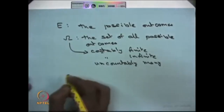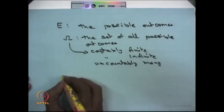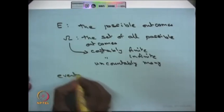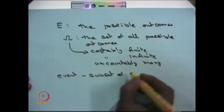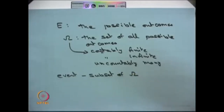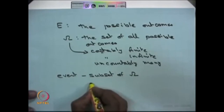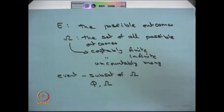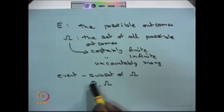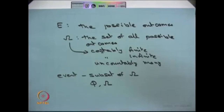Once you have omega, you can create events. An event is nothing but a subset of omega. The possible events start from the empty set, the full set omega, and all the possible subsets of omega — each of these forms an event.